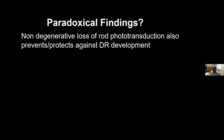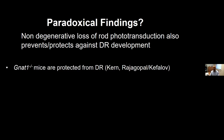However, there are some paradoxical findings that make us question that particular mechanism. Those findings are mainly that non-degenerative loss of rod phototransduction is also associated with reduced severity of diabetic retinopathy. I will point out the caveat that these findings are currently limited to mouse models. We know that transducin-1 knockout mice are protected from diabetic retinopathy — Dr. Kern's lab showed this first.